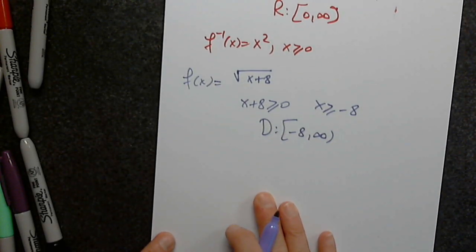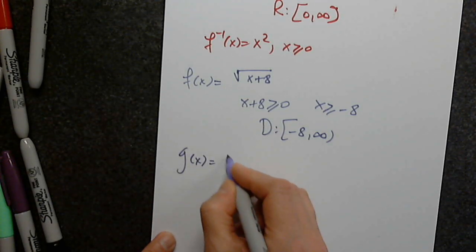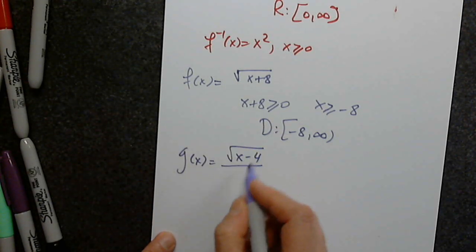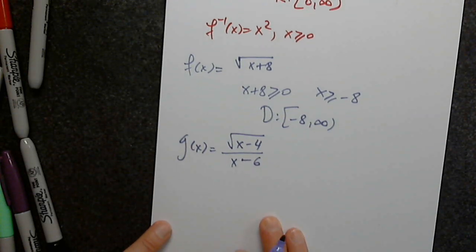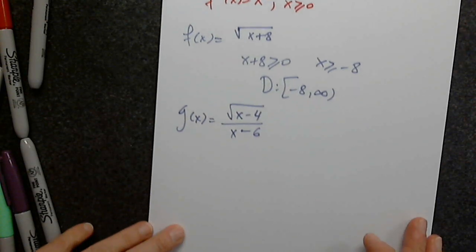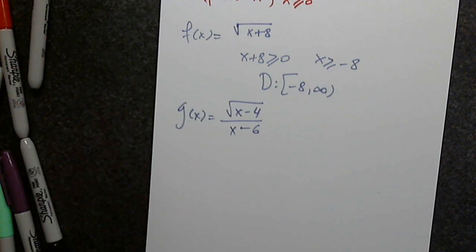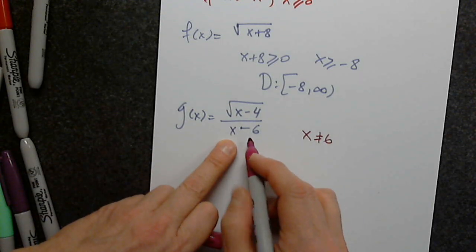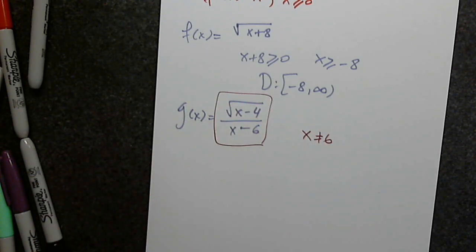We also have Q(x) = √(x - 4) / (x - 6). This is a division of two functions. This function has two conditions: x cannot equal 6 — because if x = 6, the ratio is undefined — and x - 4 must be ≥ 0, because otherwise the square root in the numerator won't exist.